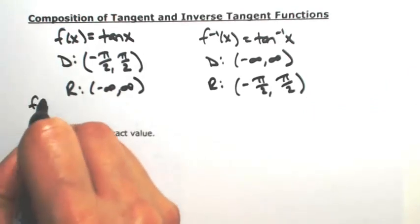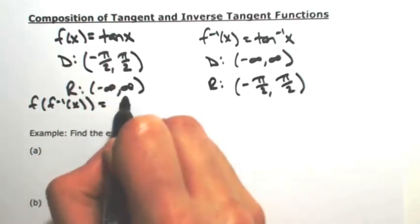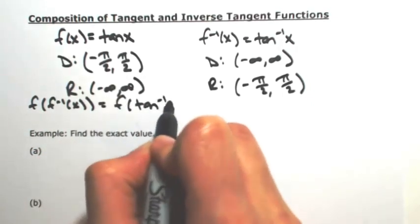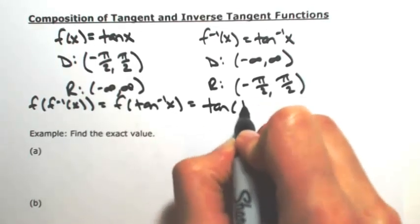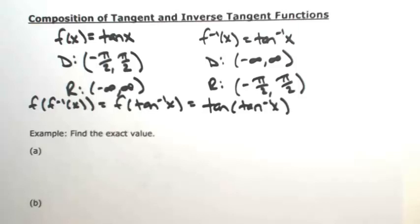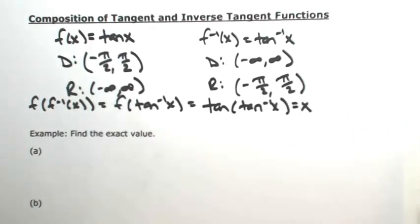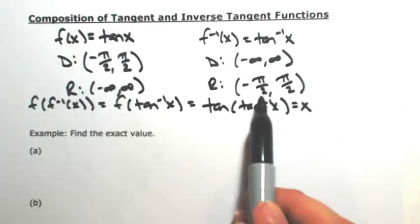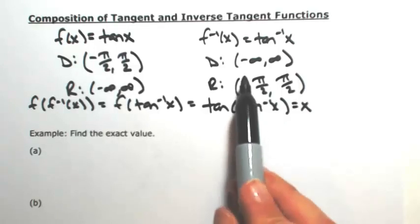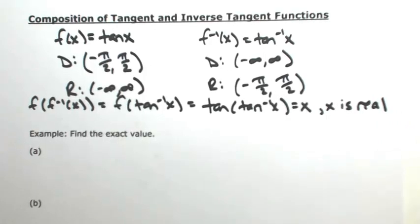So doing the composition, let's do f composed with the inverse. We would have f of inverse tangent of x, so the tangent of inverse tangent of x. Because they're inverses they'll undo each other, giving us back what we put in, as long as the inside function is defined within our restriction. Looking at the inside, the domain of inverse tangent is all reals, so this will always be defined as long as x is real.